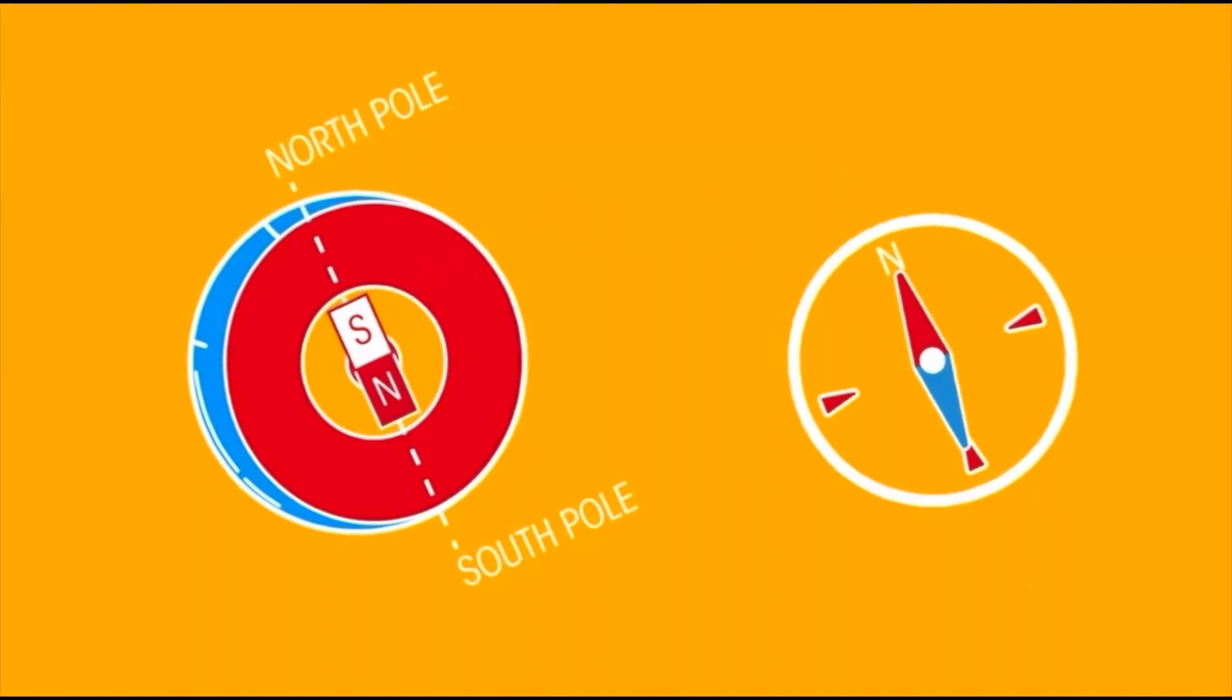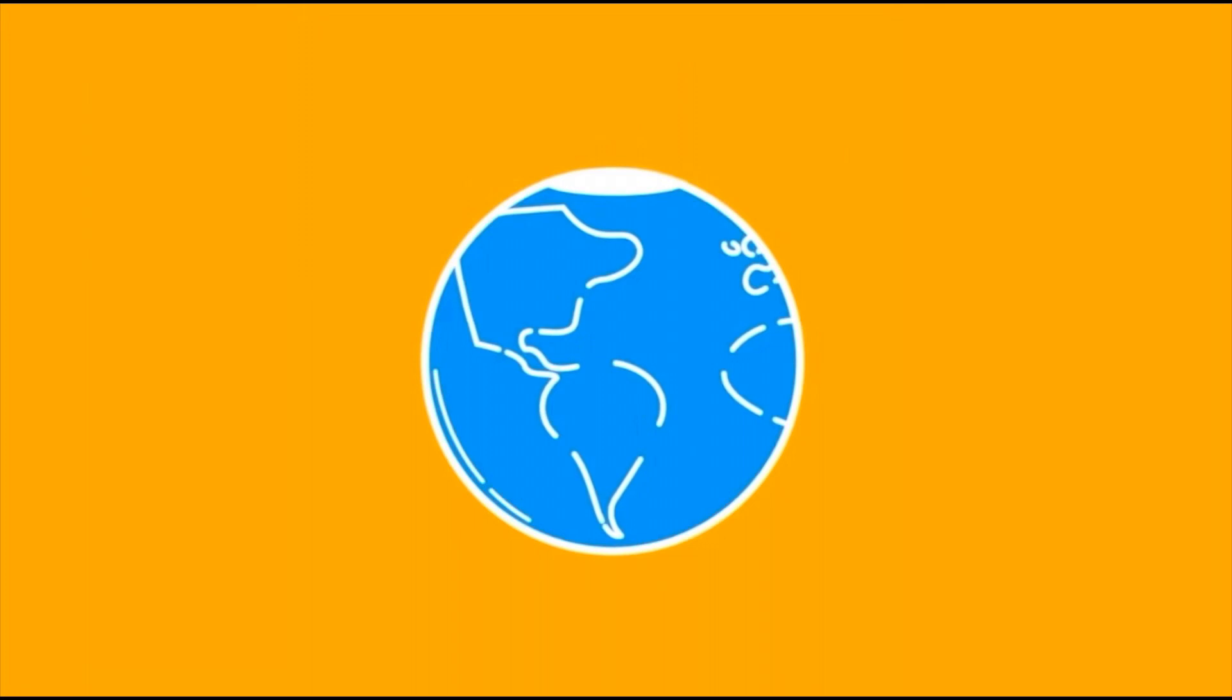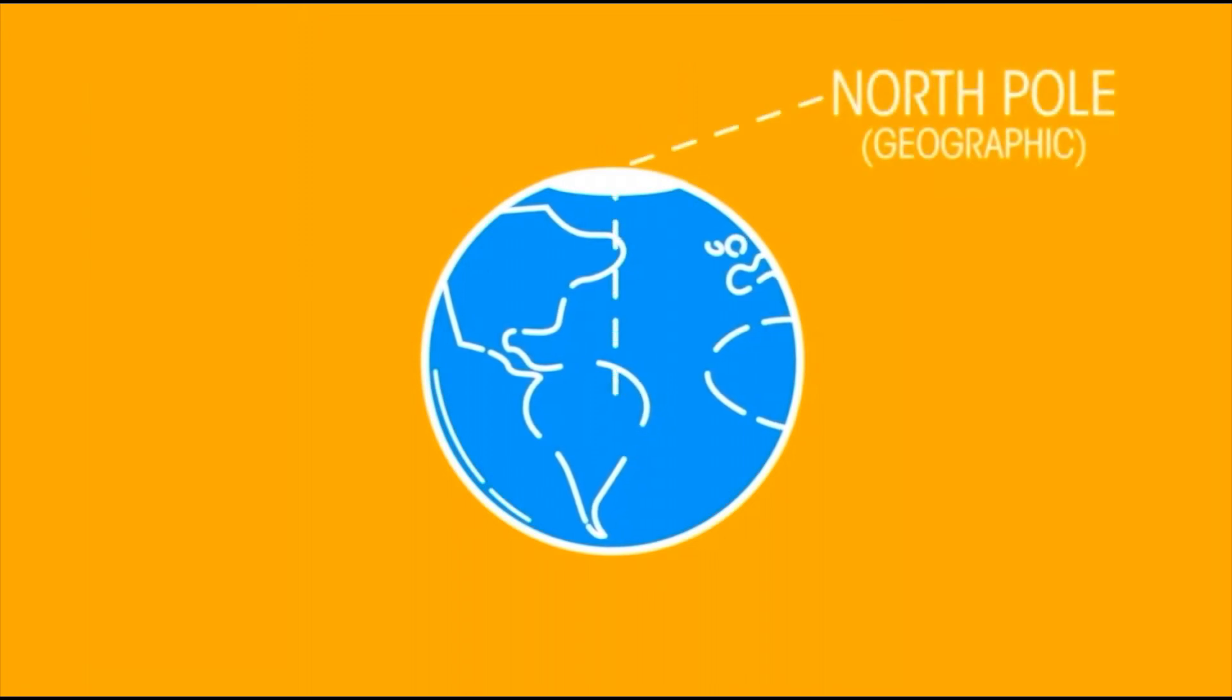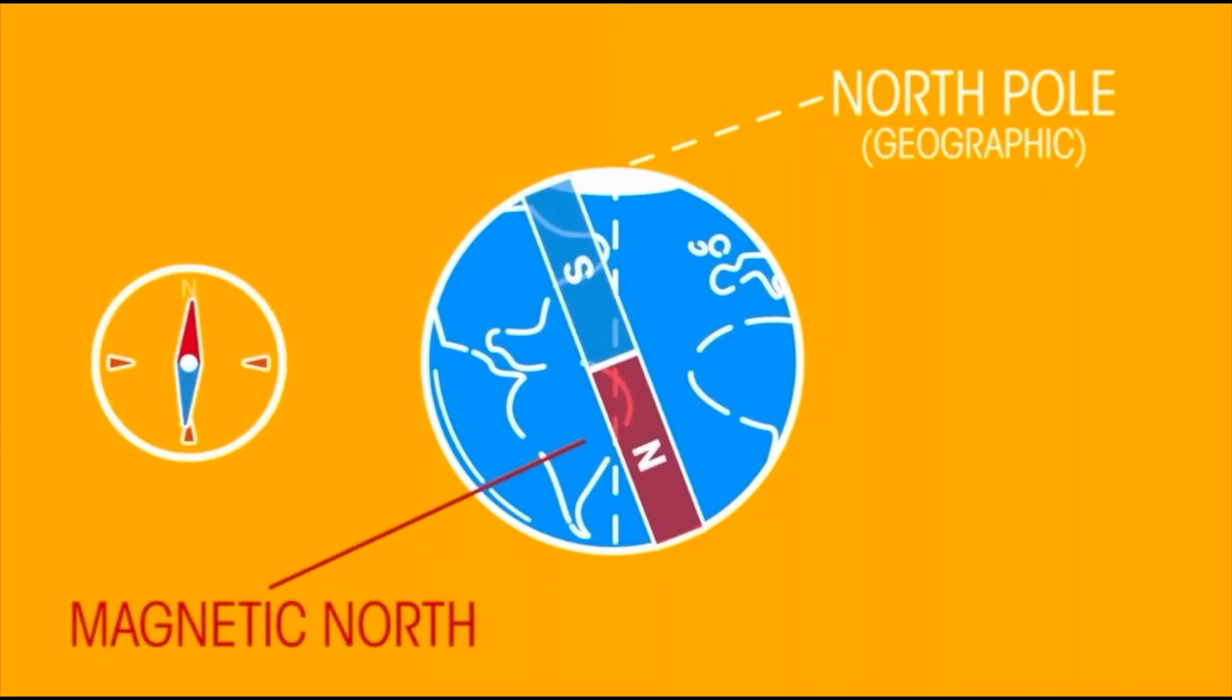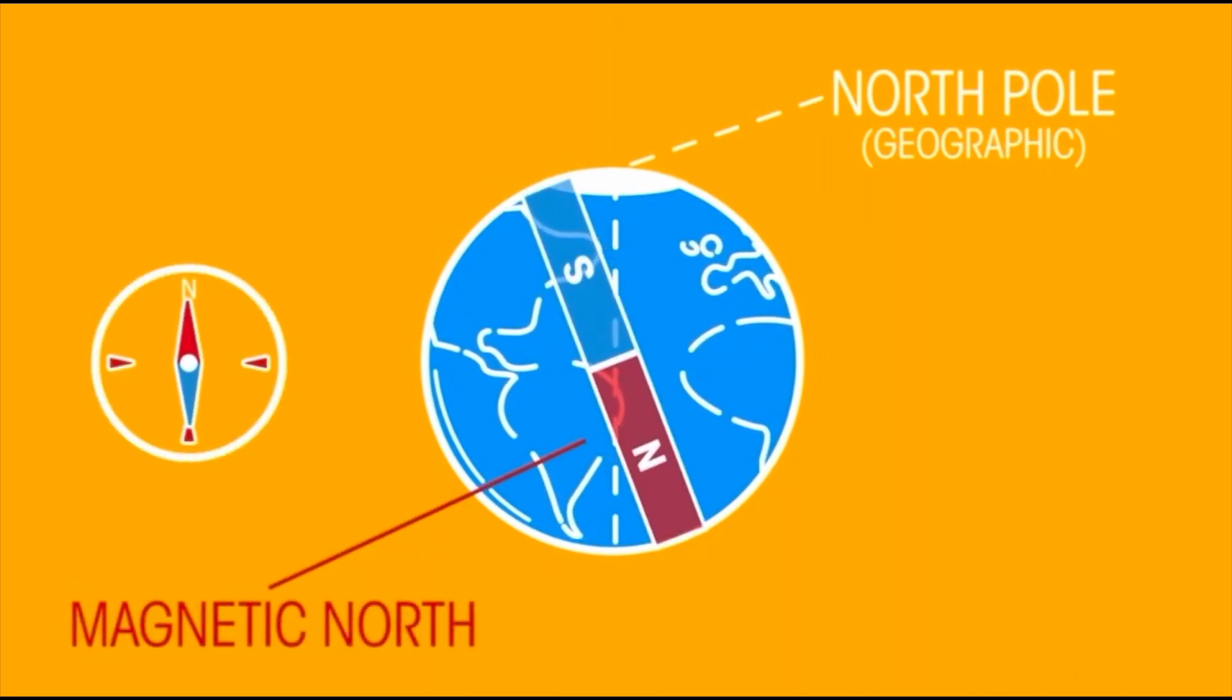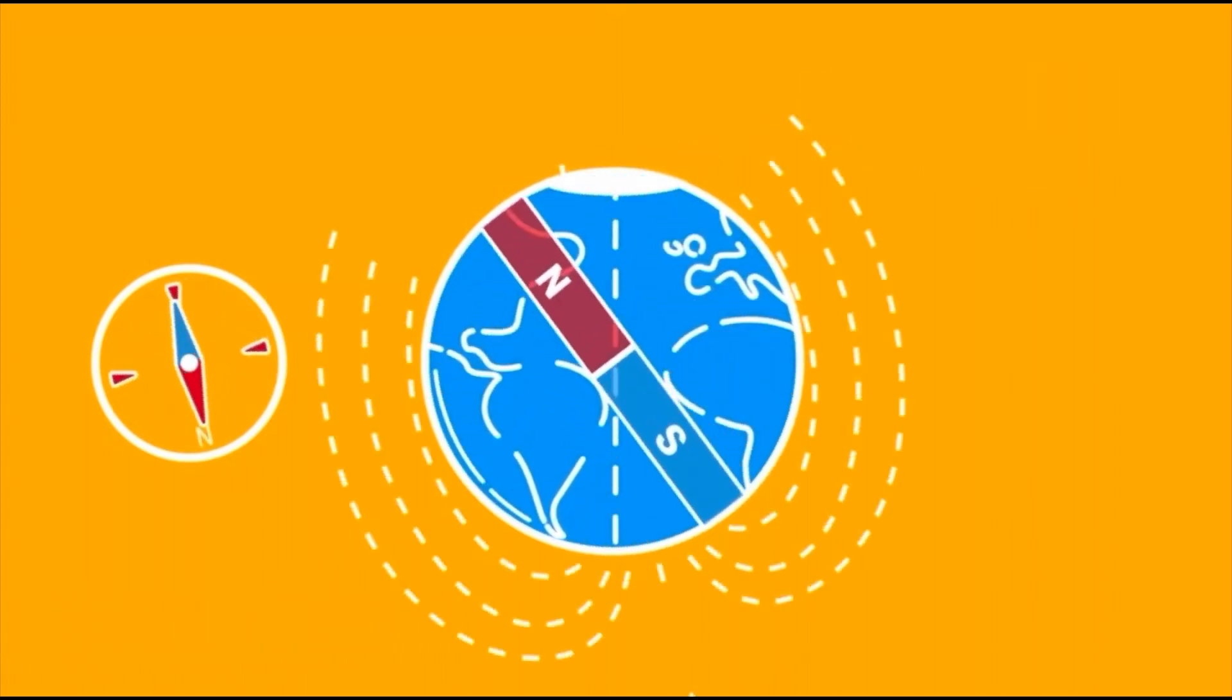Remember that the earth itself has a magnetic north and south pole. That's because the outer core of the earth is molten iron and it's spinning, and the rotation of that molten iron creates a magnetic field. Now that magnetic field is different than the geographic north pole. The magnetic north pole actually isn't in the same location but that magnetic north pole is what attracts your compass needle.